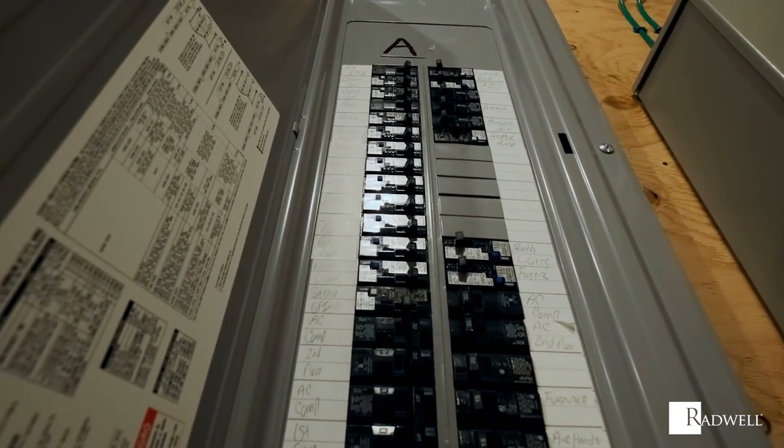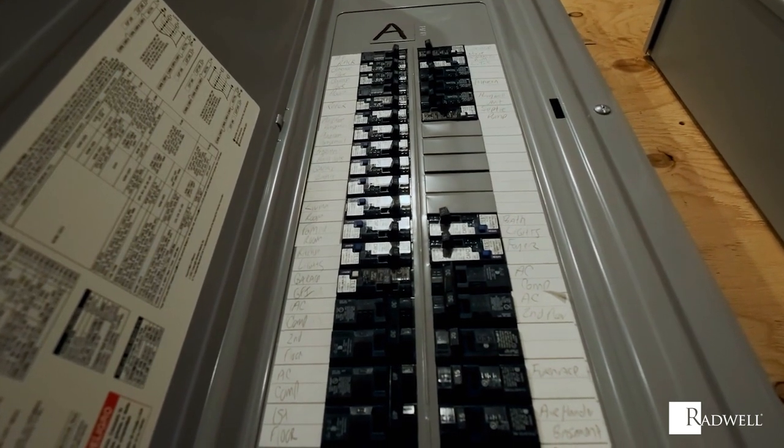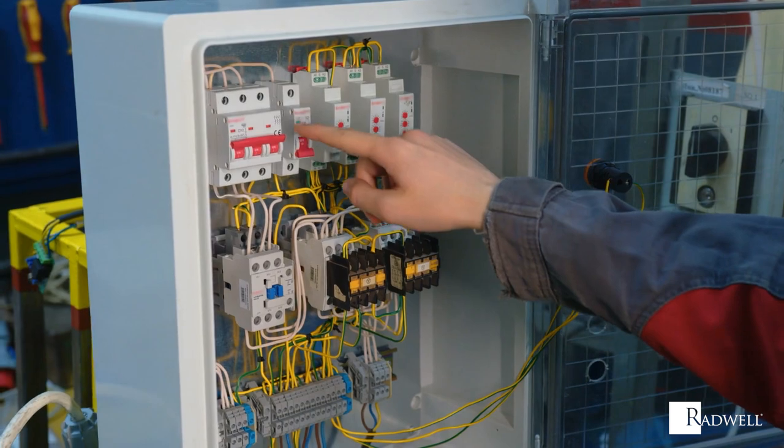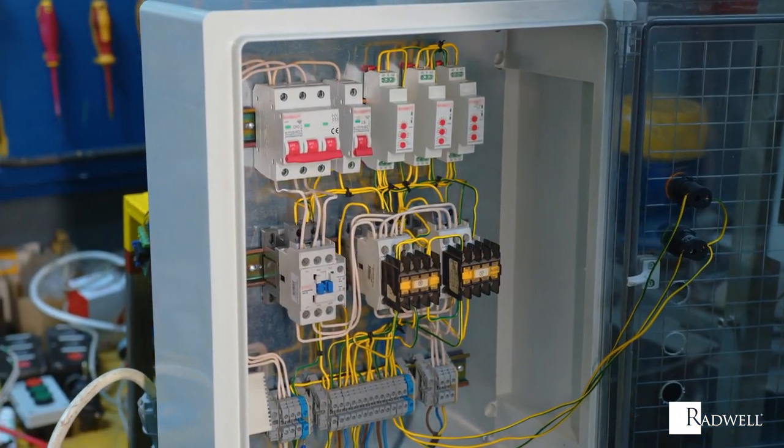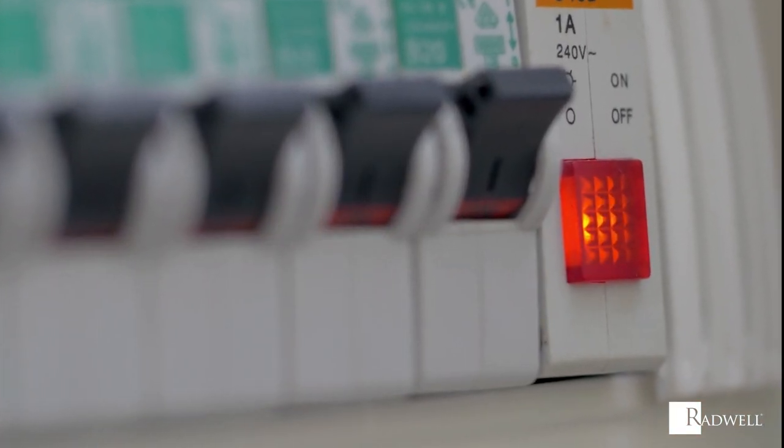A circuit breaker is an electrical safety device designed to protect an electrical circuit from damage caused by a short circuit, overload, or overcurrent. When an electrical fault occurs, the breaker will trip, shutting off power to the circuit. In this episode of Radwell's How It Works series, we are going to explore how a circuit breaker works.